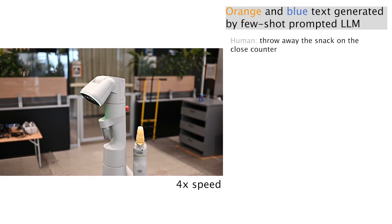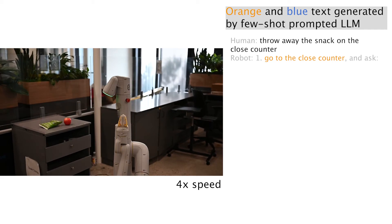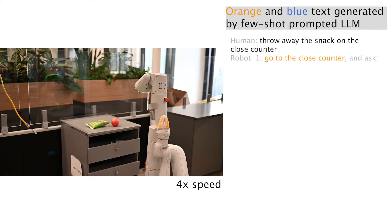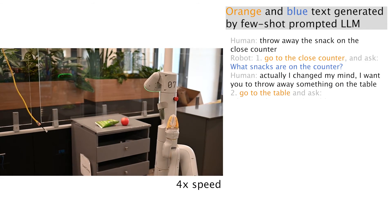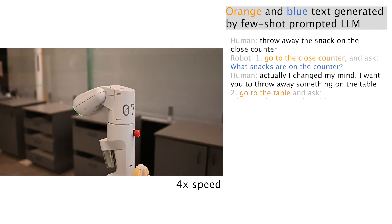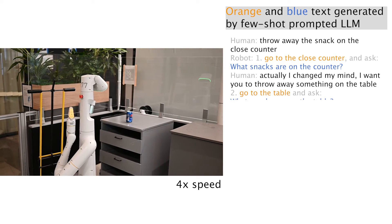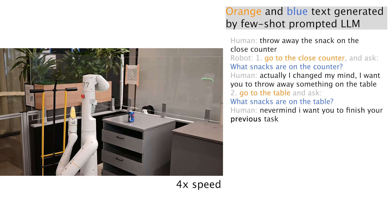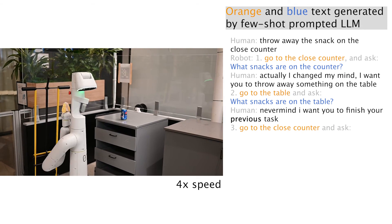We also observe interesting emerging capabilities with the proposed Inner Monologue method. In this interactive setup, the task is to throw away the snack on the closed counter. The robot first goes to the counter and asks what snacks are on the counter. Instead of answering the question, the human operator asks the robot to perform a different task: I want you to throw away something on the table.